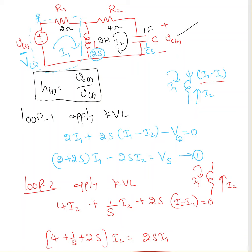Since we're in loop 1, I always assume I1 current is larger than I2. So whenever I'm in loop 1, I always write down I1 minus I2. So this is my loop 1 equation.